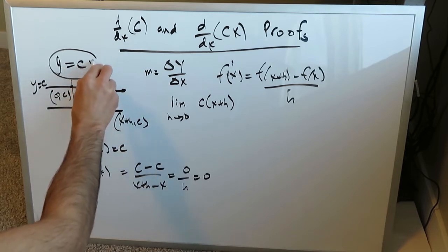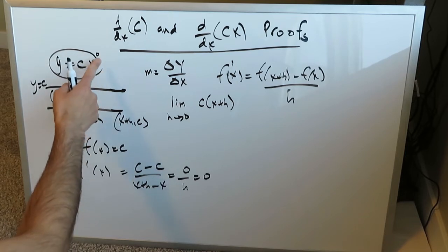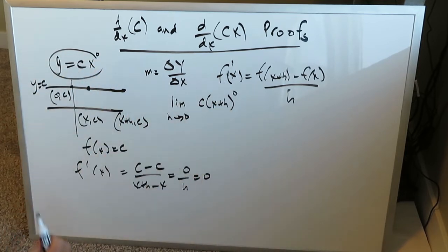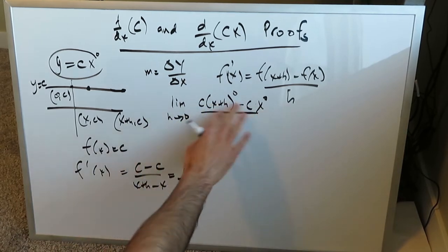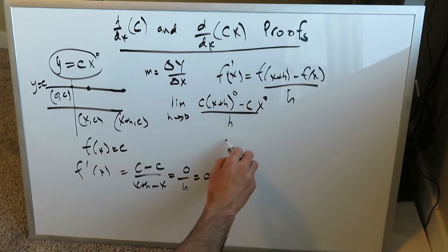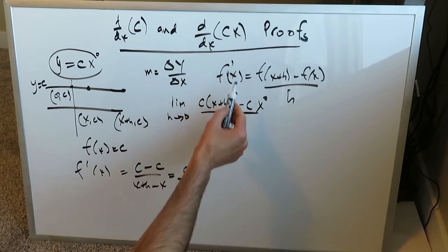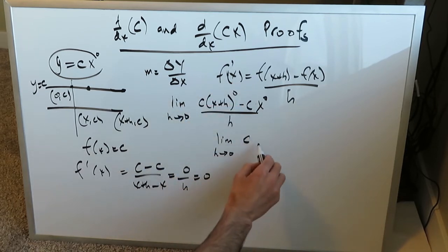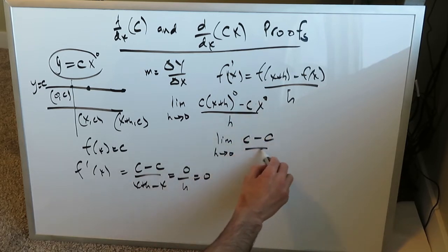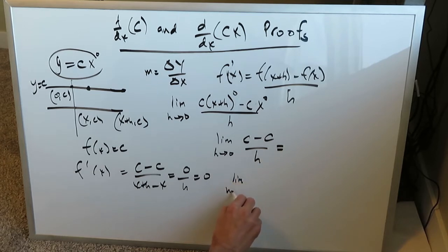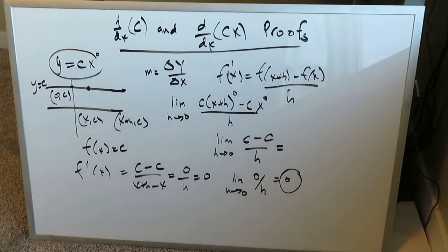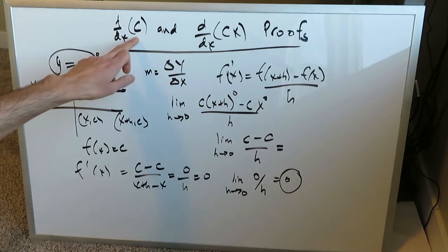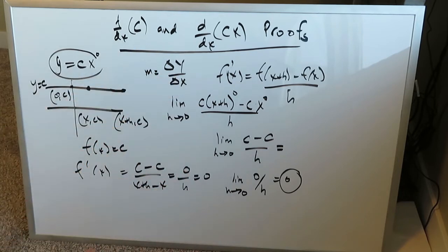You have c times (x+h) to the power of 0 minus c, all over h. Opening it up: (x+h)⁰ is 1, and x⁰ is 1, so you get c minus c over h, which is 0 over h. The limit as h approaches 0 is 0, and the derivative is proven. Any time you have the derivative of a constant, you automatically get zero — no tedious calculations needed. Now you know why: a horizontal line has no slope, and any tangent line drawn to it would coincide with the line itself.